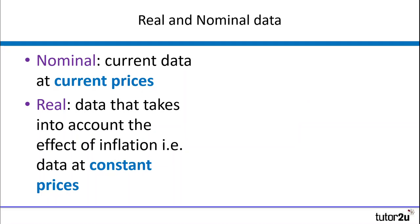Nominal data is just current data in current prices, whereas real data is data that takes into account the effect that inflation has on that data. We would generally talk about that as being data at constant prices.